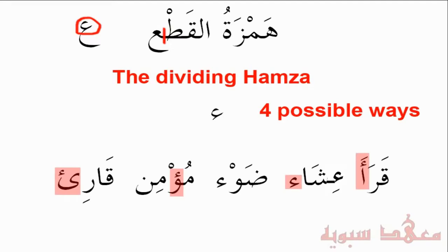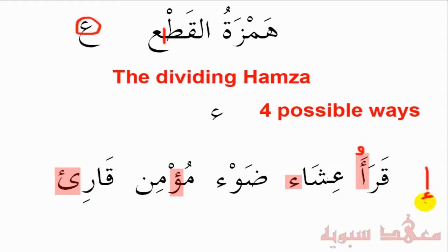We can see that we can have the Hamza all alone, as in the word Isha'. We can also have it on top of an Alif. What Harakah is on top of the Hamza is irrelevant — it could be a Dhammah, a Fathah, or a Kasrah. With the Alif, if there was a Dhammah, the Hamza would still be on top. If it had a Kasrah with the Alif, then you'd put the actual Hamza below it and then put the Kasrah there.